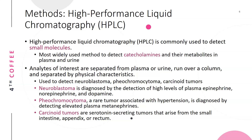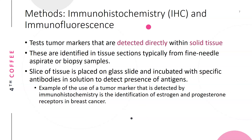Pheochromocytoma is a rare tumor associated with hypertension and is diagnosed by detecting elevated levels of plasma metanephrines — the breakdown products of epinephrine and norepinephrine. Carcinoid tumors are serotonin-secreting tumors that arise from the small intestines, appendix, or rectum.